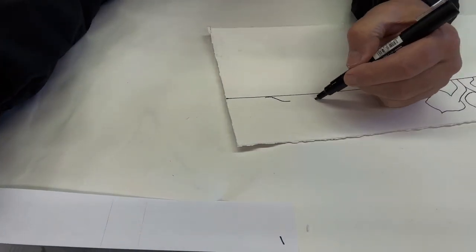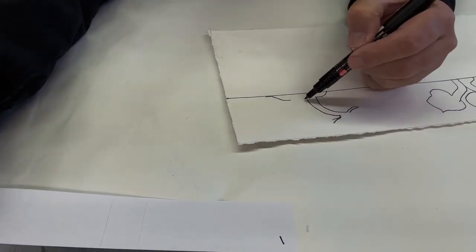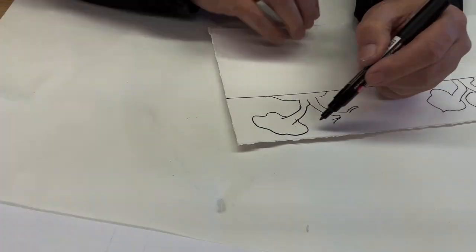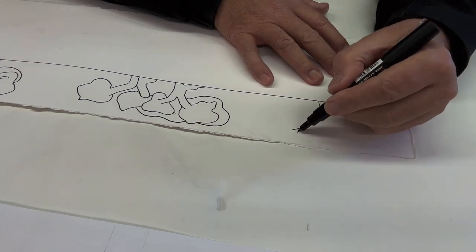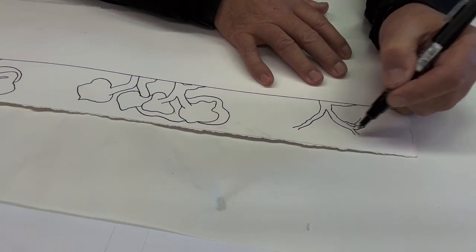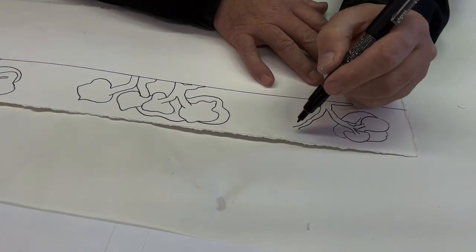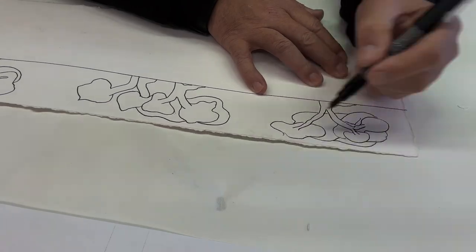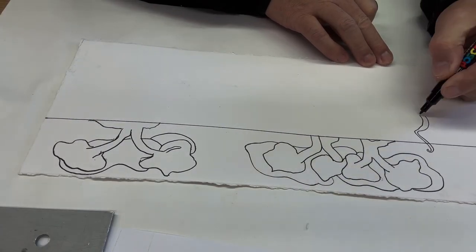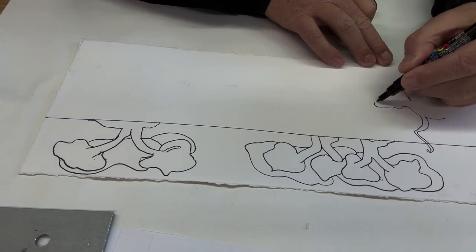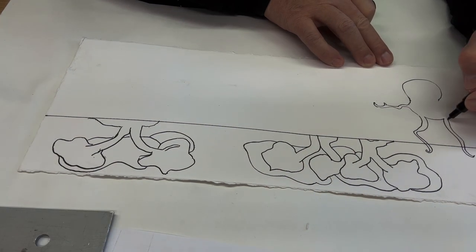Here I just grab a Posca pen and I'm putting in some very loose abstract trees, I guess we'll call them. No real plan here, just warming up, seeing if I can put some marks on paper. Here it kind of went off the rails, no plan or anything.